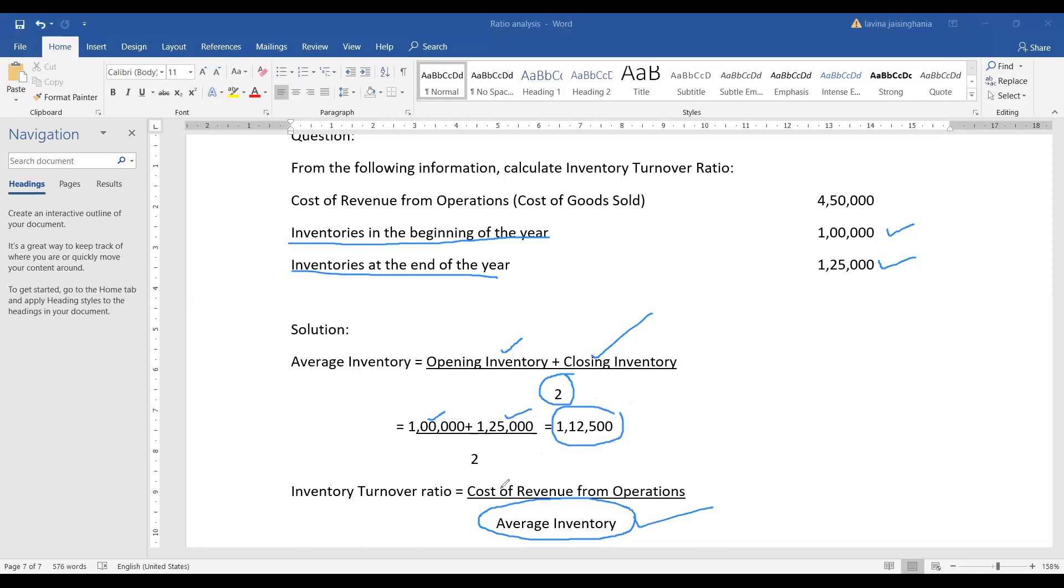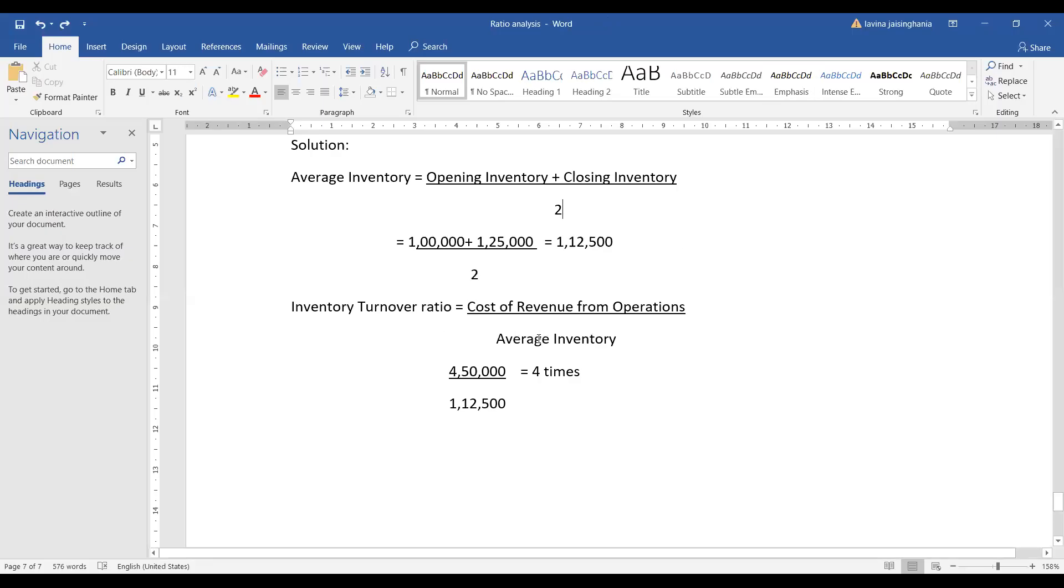Now you want cost of revenue from operation. In this question you are directly given cost of revenue from operation, that is 4 lakh 50,000. So you can apply the formula: cost of revenue from operation divided by average inventory. So we are having cost of revenue from operation as 4 lakh 50,000 divided by 1 lakh 12,500. You will get your answer as 4 times. You will have to calculate this ratio in times.